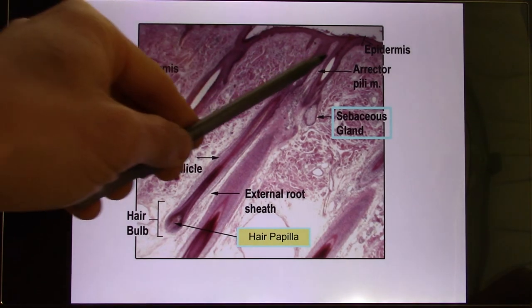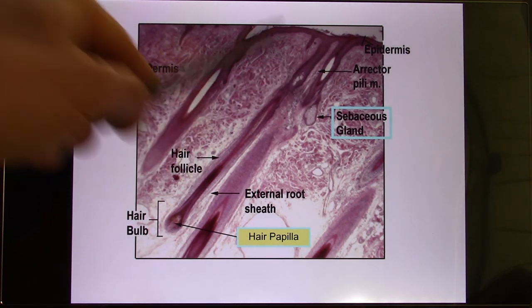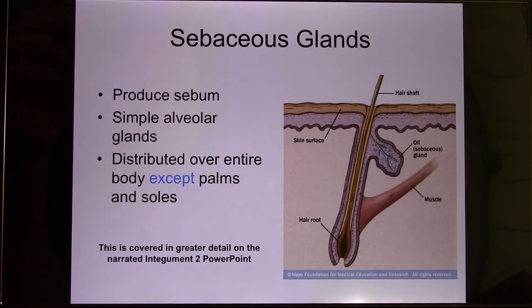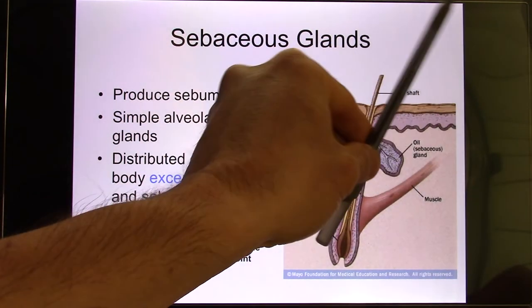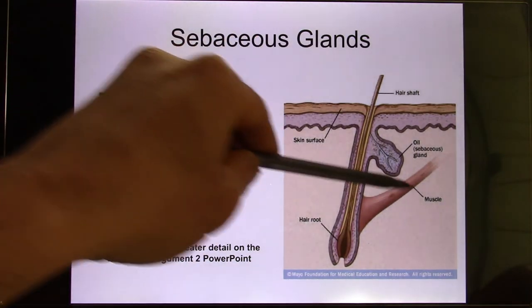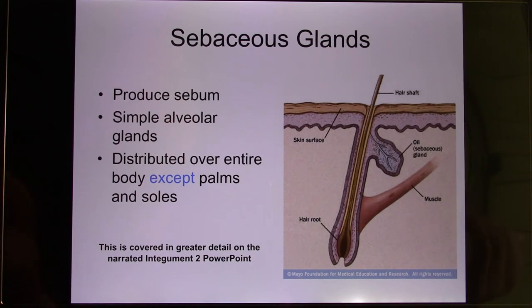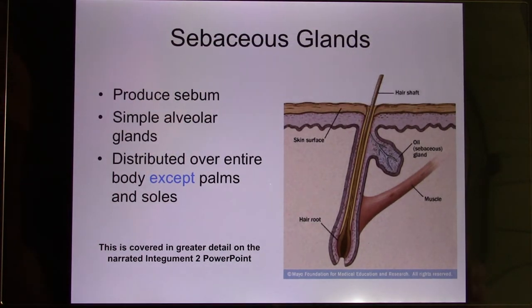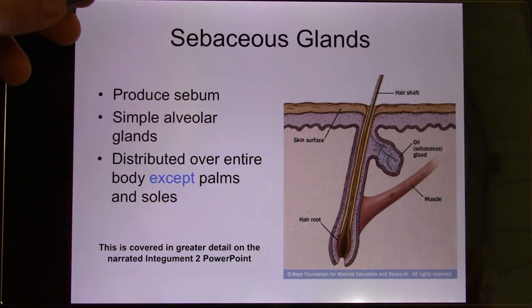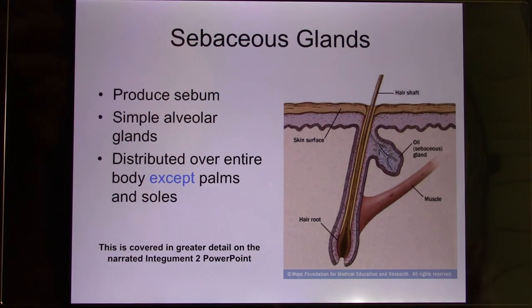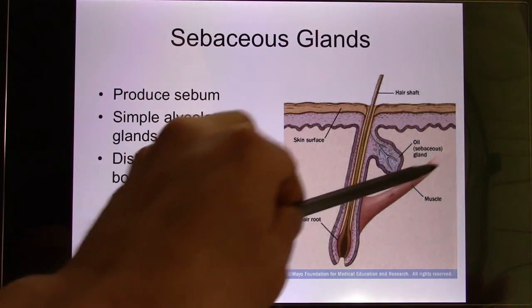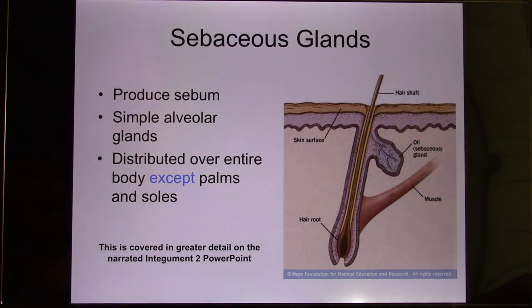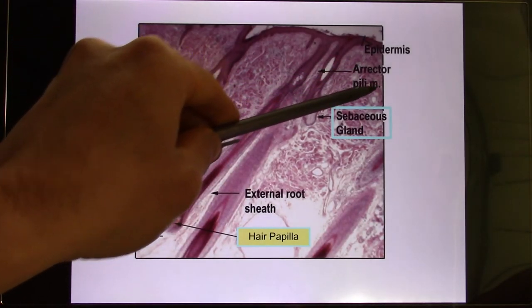Next is the arrector pili muscle — it's a small muscle. Its function is: when it contracts, it makes the hair stand up. In some animals, they use the arrector pili muscle to make hair stand out for communication, like during mating season when some birds make their hair stand out. In humans it's a fight-or-flight response. We've gradually lost this function for threat display, but we still have it — that's what causes goosebumps. When the arrector pili muscle contracts, the hair stands up.